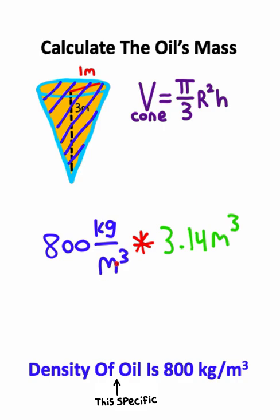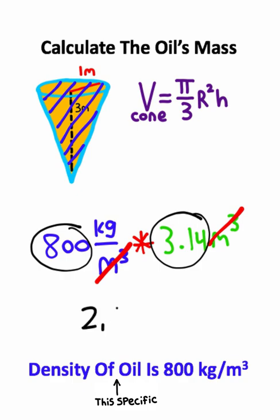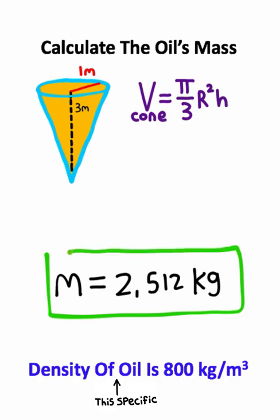If I multiply these two numbers together, notice that the cubic meters cancel each other, and 800 times 3.14 is equal to 2,512 kilograms. So this is the approximate mass of the oil and the solution to this problem.